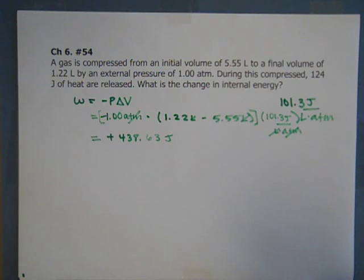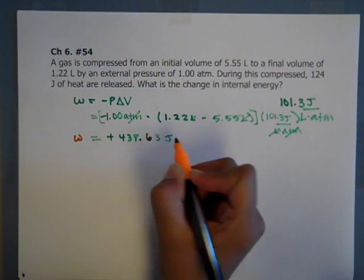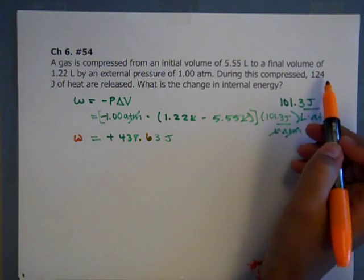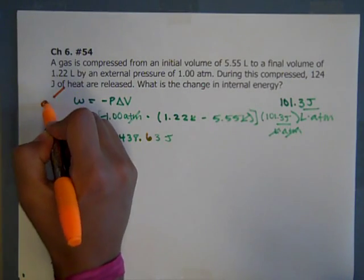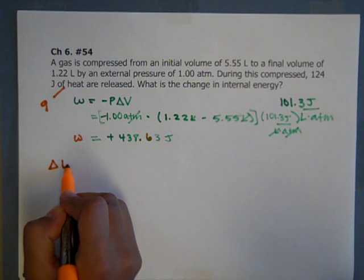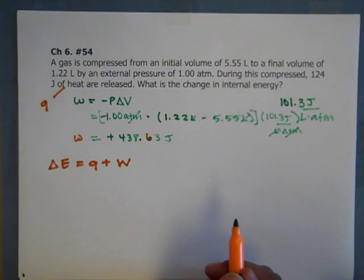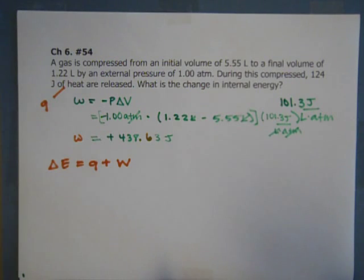So from there, we have our work, and it's 438.63 joules. Then what do we do? We also know that 124 joules of heat released is going to represent what? That would be our Q. We know it's heat released and that is our symbol for Q. And we know our delta E formula, what we're eventually looking for, is Q plus work. So at this point, it's just a simple Q plus work. We have the Q and we have the work. We just need to make sure we have the right signs associated with it.